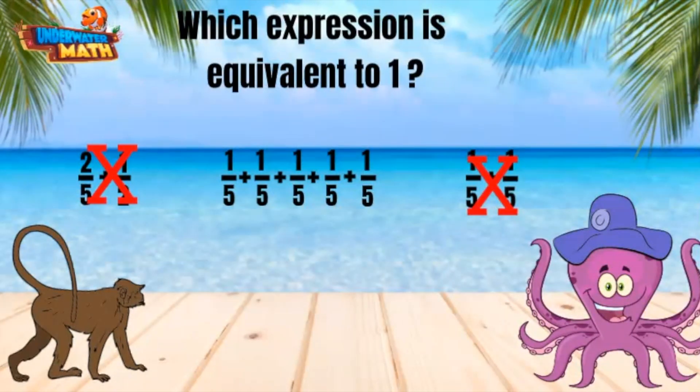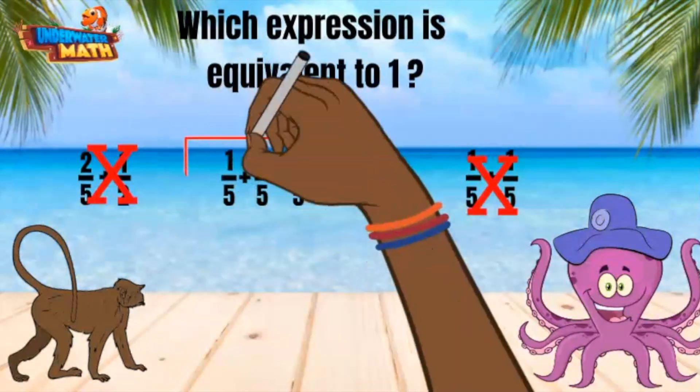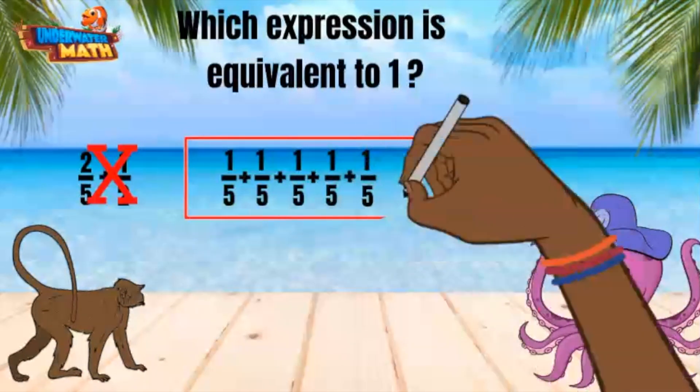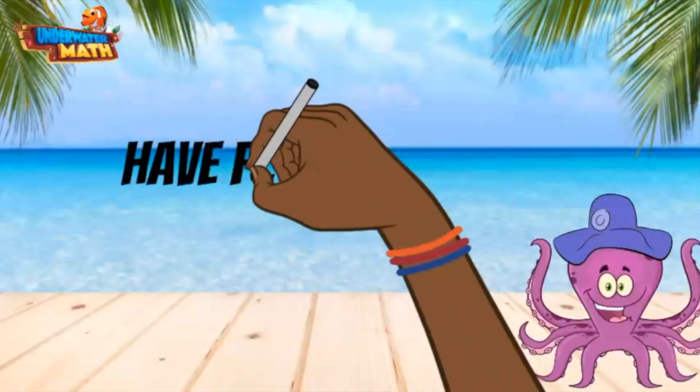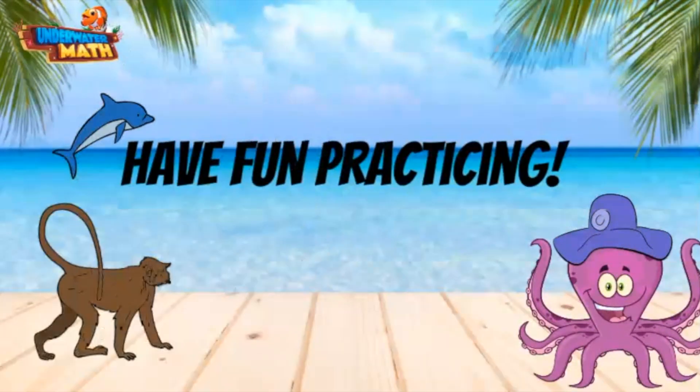The middle option shows five-fifths broken into unit fractions. Adding one-fifth together five times makes one whole. Great job! Thanks for helping today. Have fun practicing.